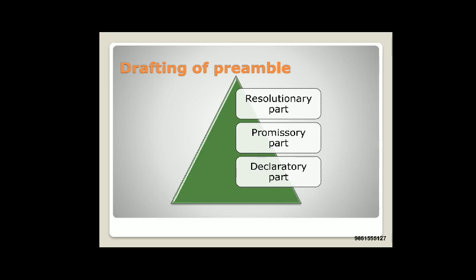The second part is the promissory part. The promissory part means we are promising to constitute India into the following conditions. India got a sovereign country, and these are our promises: to provide social justice, economic justice, political justice, liberty of thought, expression. These things are promised. We promise to all citizens these things will be provided without any discrimination.